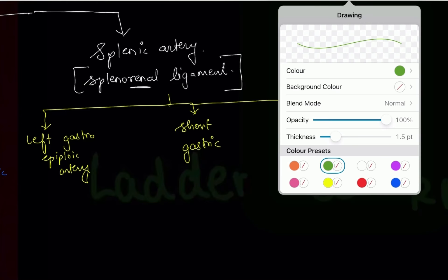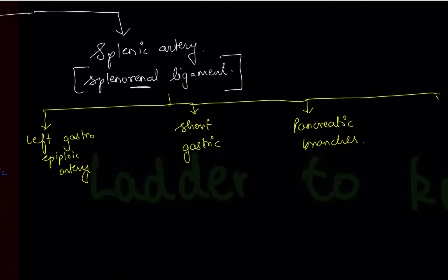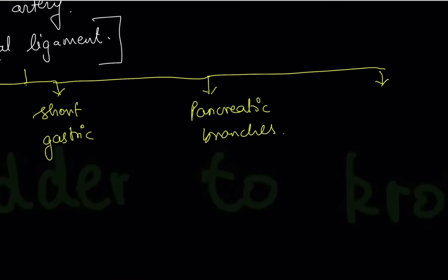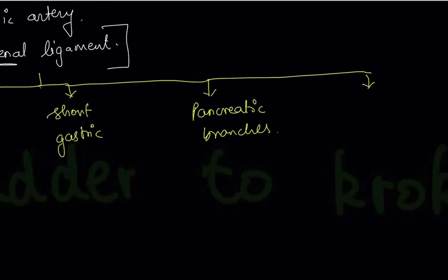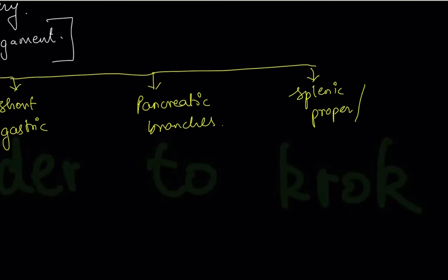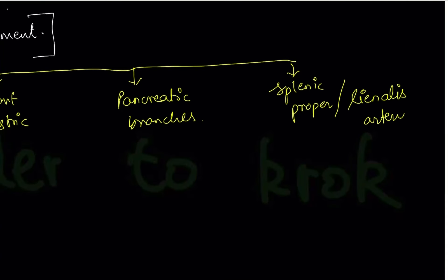There is one more branch of the splenic artery I mentioned orally but didn't write: it is the splenic proper, also called the lienalis artery. Lienalis is another term for spleen. So the proper splenic or lienalis artery goes specifically to supply the spleen.